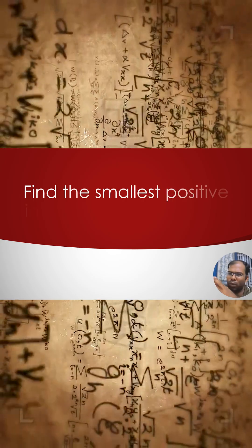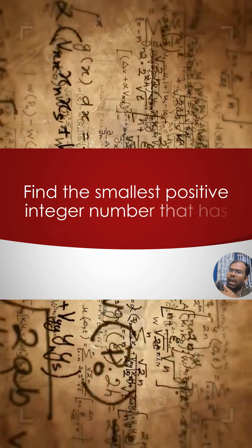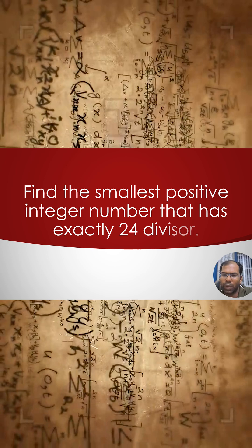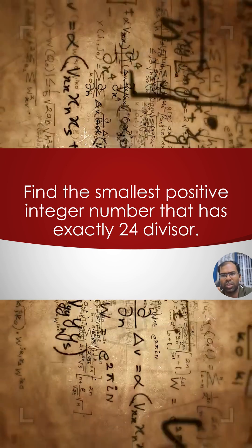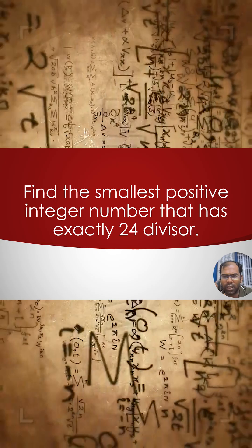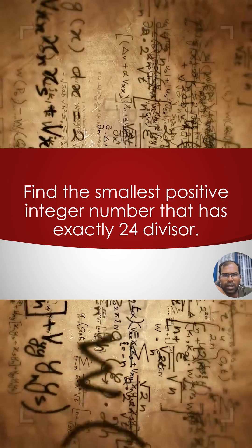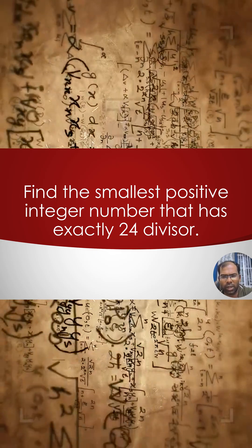So find the smallest positive number that can have exactly 24 divisors. If you know the answer, comment it. We will post the answer in the next video. Thank you for watching. Stay tuned and subscribe for the channel. Have a good day!